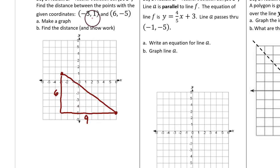You could get the 9 and the 6 by looking at the coordinates. If you look at the x-coordinates from negative 3 to positive 6 is 9 units. If you look at the y-coordinates from a 1 to a negative 5 is 6 units.